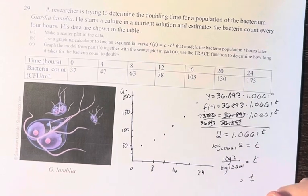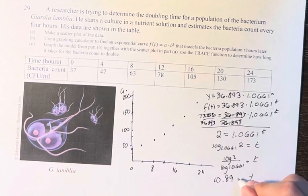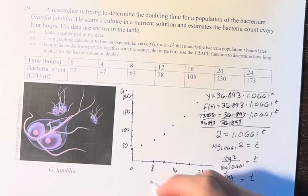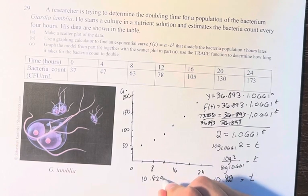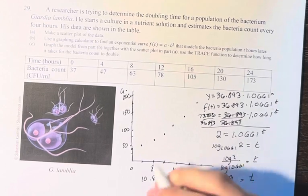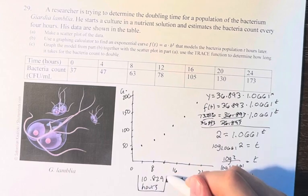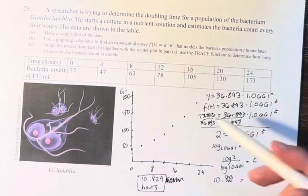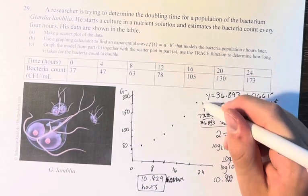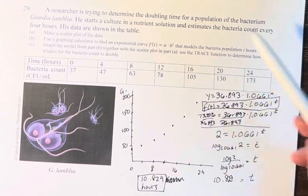And then you just plug this into your calculator and you get 10.89829. So it takes 10.829 hours for the bacteria count to double, based off of this equation which we found by doing an exponential regression on these points.